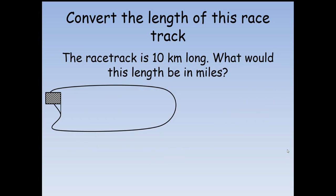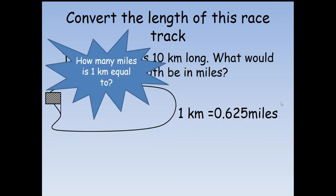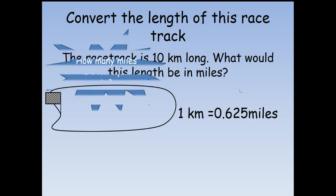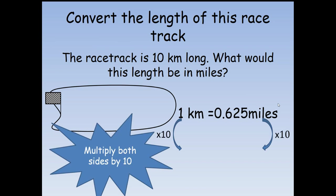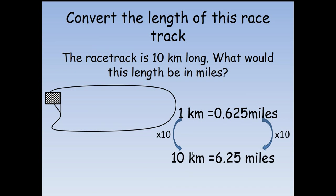Let's have a go at a different one. What if my racetrack was 10 kilometers long? What would this length be in miles? If I'm working in kilometers, the best thing to do is remember that one kilometer is 0.625 miles, which you should have written down before. If one kilometer is 0.625 miles, for 10 kilometers I just times both sides by 10. One times 10 is 10 kilometers, and 0.625 times 10 is 6.25 miles. The length of the track in miles would be 6.25.